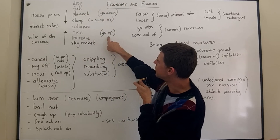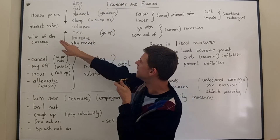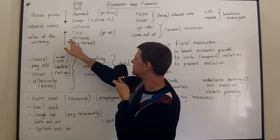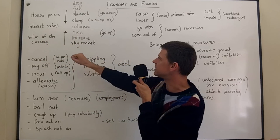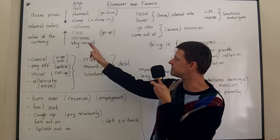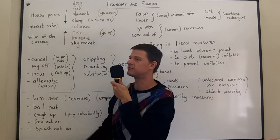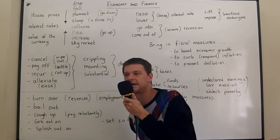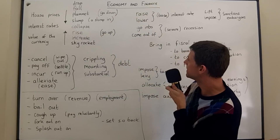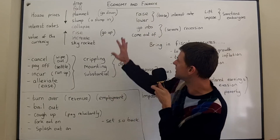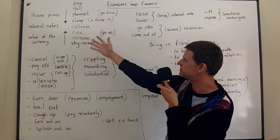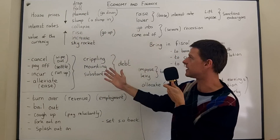Now for going up, interest rates can rise, the value of your currency can increase, and house prices can skyrocket. Skyrocket is the opposite of plummet — it means go up very, very quickly. Use these for describing trends in prices.